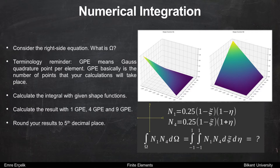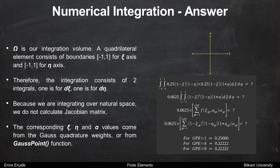Calculate the integral with given shape functions. Calculate the result with one Gauss point, four Gauss points, and nine Gauss points. Round your results to the fifth decimal place. Omega is our integration volume.